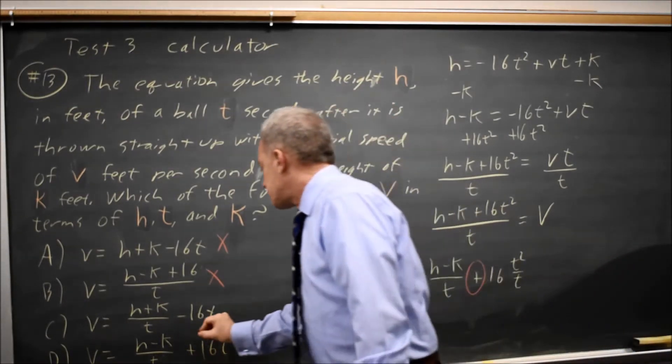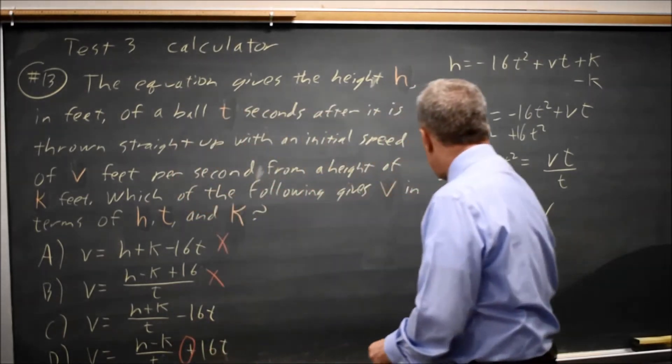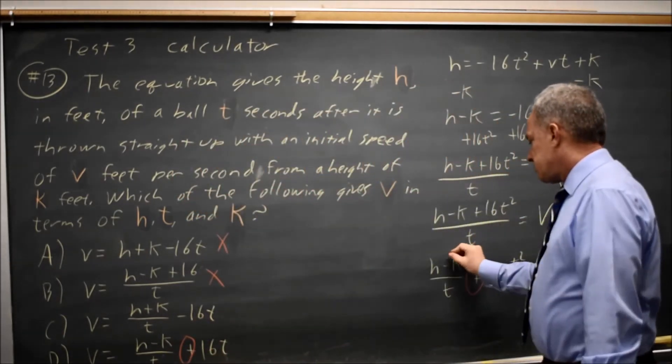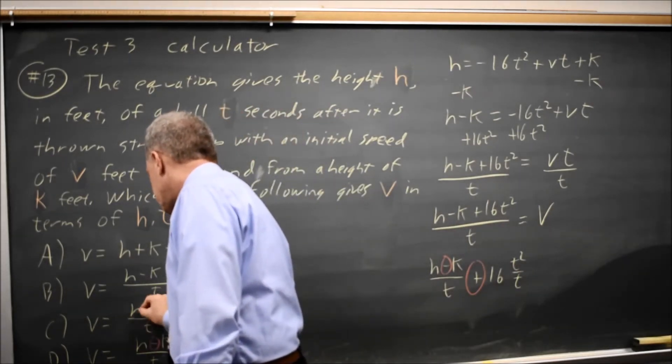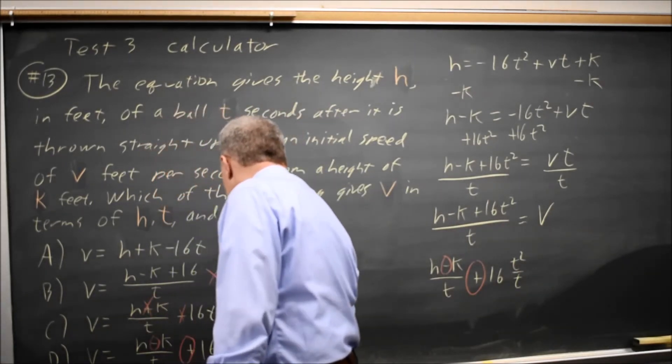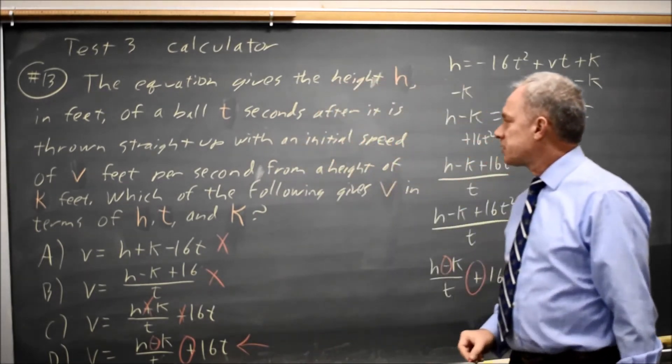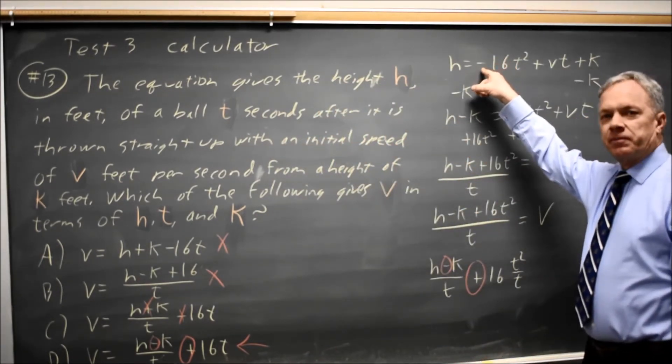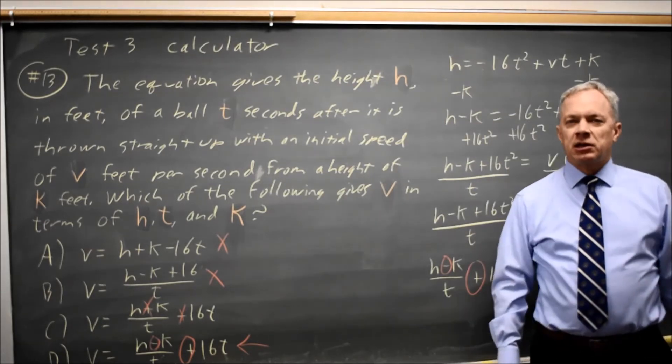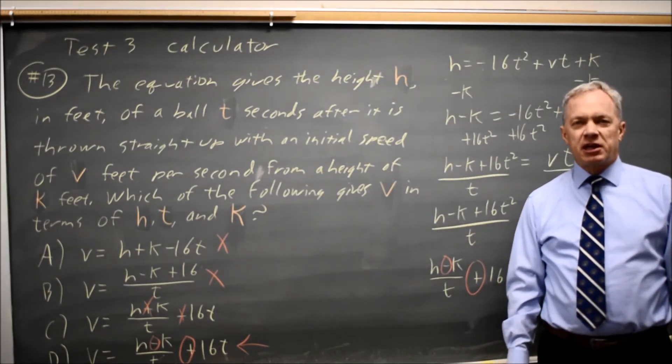So the answer with a plus is correct and also the h minus k is h minus k here, which matches choice d also. Choice c is wrong on both counts, so d is the correct answer if we solve this initial formula for v. Come back soon for our next SAT math video.